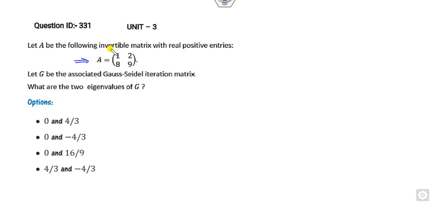For question 331, A is an invertible matrix with positive real entries. G is the associated Gauss-Seidel iteration matrix. You need to find the eigenvalues of G. Remember, you can find the trace and determinant of the eigenvalues. The determinant of G will be 0 and -16/9 if any options match.